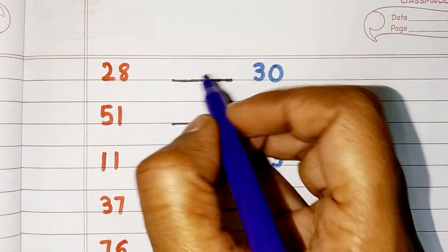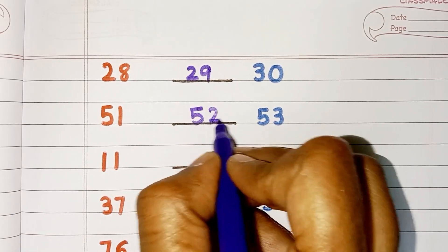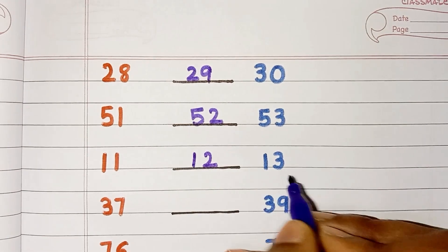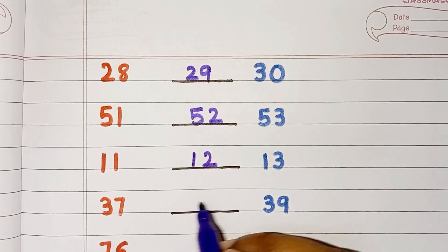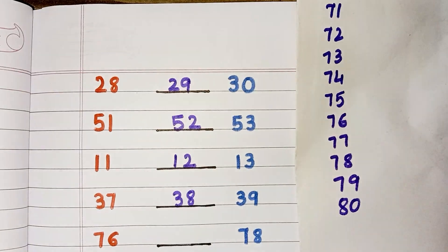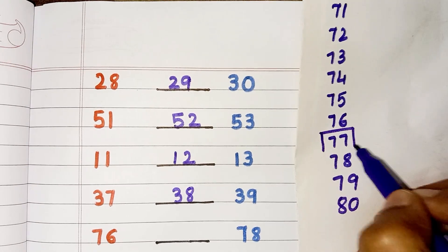29 is between 28 and 30. Number 52 is between 51 and 53. 12 is between 11 and 13. Number 38 is between 37 and 39. Let's take number 76 and 78.